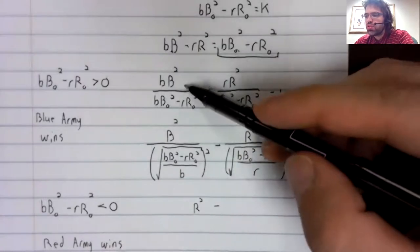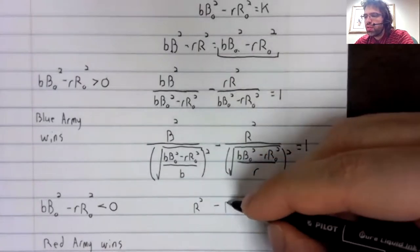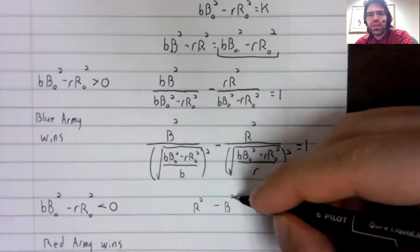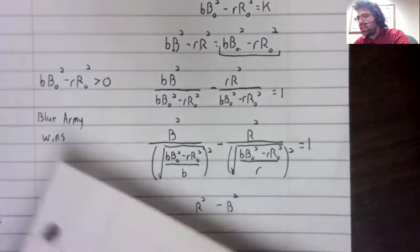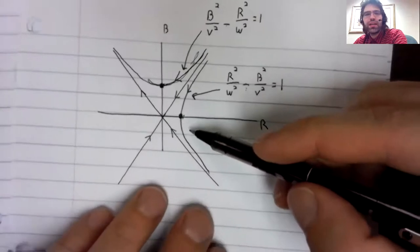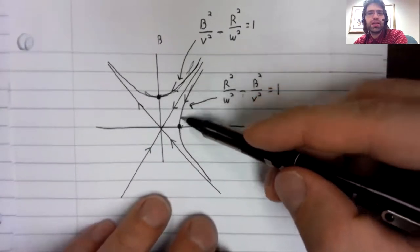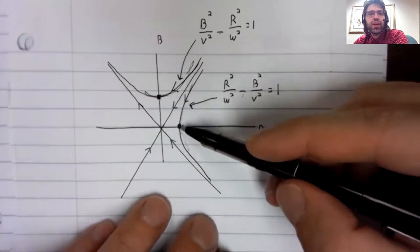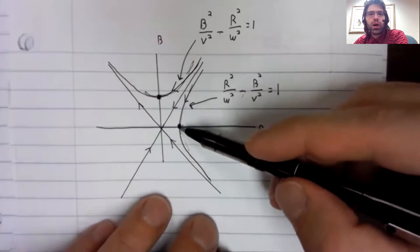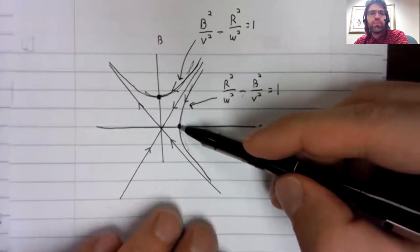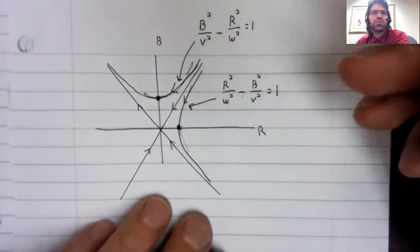So the negative becomes positive and the positive becomes negative. And that then gives you a hyperbola that looks like this. And it's blue army that is wiped out at this point.